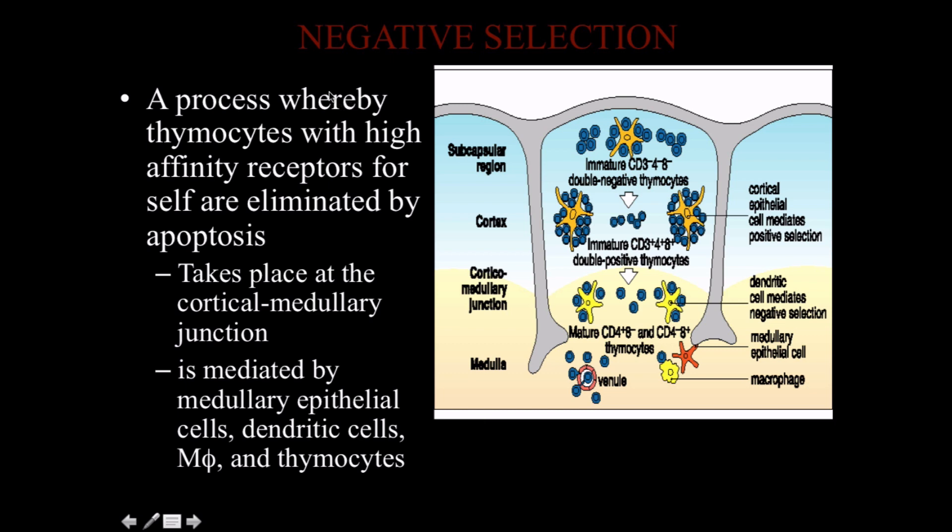Now, negative selection. We've differentiated into helper T cells or cytotoxic T cells at the base level, and we've confirmed that the T cell receptor and co-receptor work well with MHC proteins. Now we need to remove all the T cells that would identify our own cells as foreign and kill them. This is the really super-selective process.